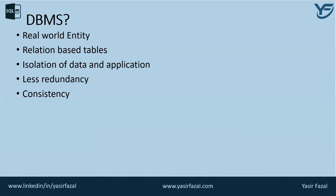Consistency is a state where every relation in a database remains consistent. There exist methods and techniques which can detect attempts of leaving a database in an inconsistent state. A database can provide greater consistency compared to other forms of data storage like file processing systems. DBMS is also equipped with a query language, which makes it more efficient to retrieve and manipulate data. A user can apply many different filtering options to retrieve a dataset — traditionally this was not possible with file processing systems. This is where SQL comes in.